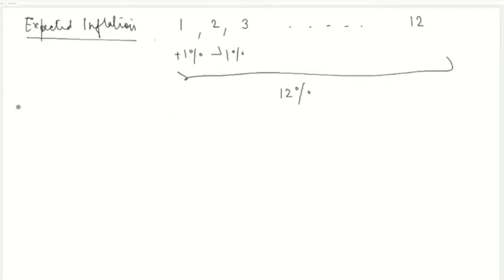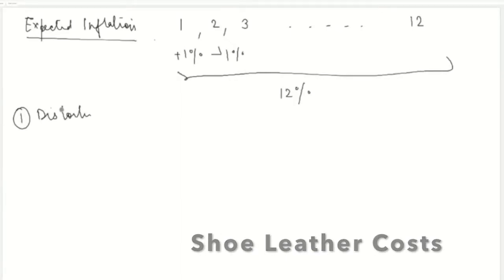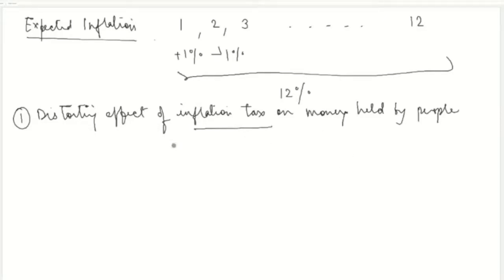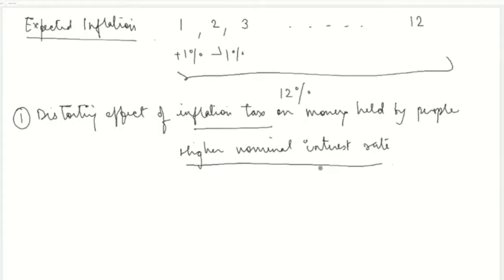The first cost of expected inflation is the distorting effect of the inflation tax on money held by people. As inflation increases, it leads to higher nominal interest rates — this is Fischer's effect: with increasing inflation, the nominal interest rate also increases. As nominal interest rates increase, money demand decreases because the opportunity cost of holding money increases.